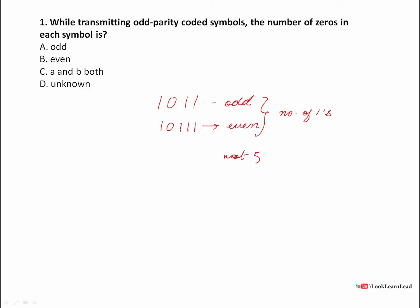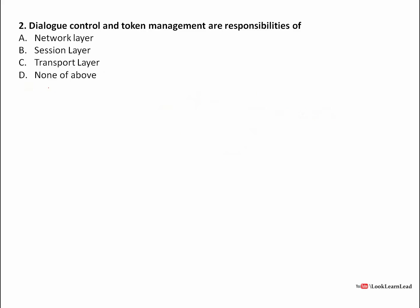The number of zeros doesn't matter. So the answer would be D — unknown. While transmitting odd parity coded symbols, the number of zeros in each symbol is unknown, because for calculating parity coded symbols we generally use the number of ones. So the number of zeros doesn't matter. The answer is D — unknown.